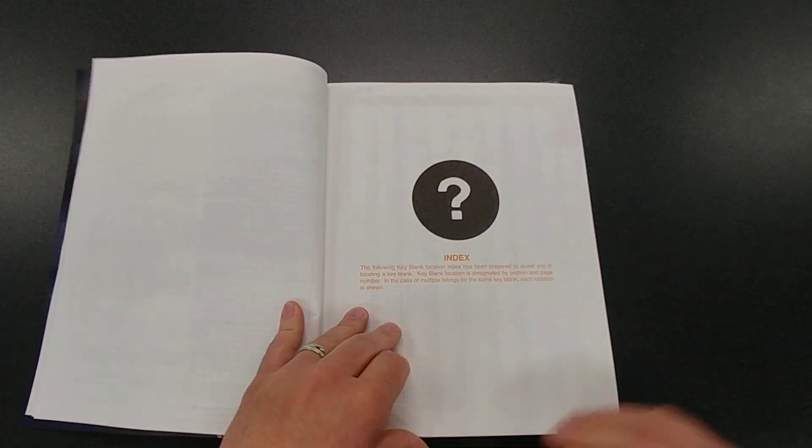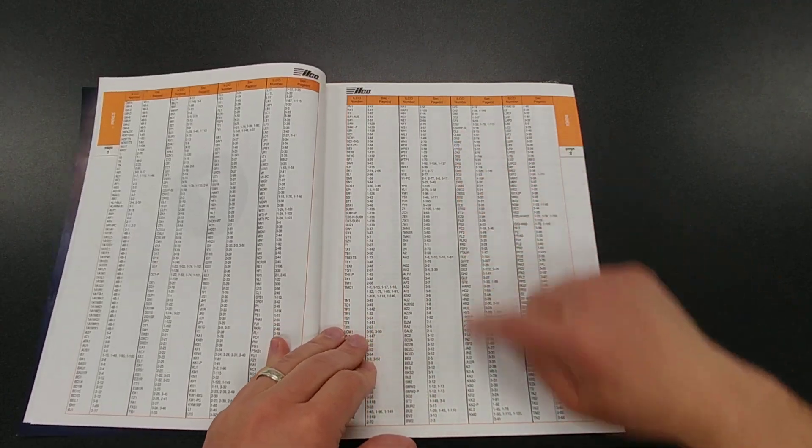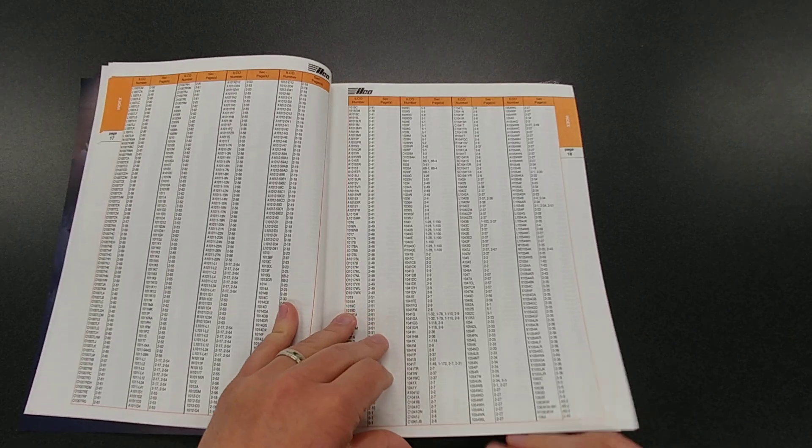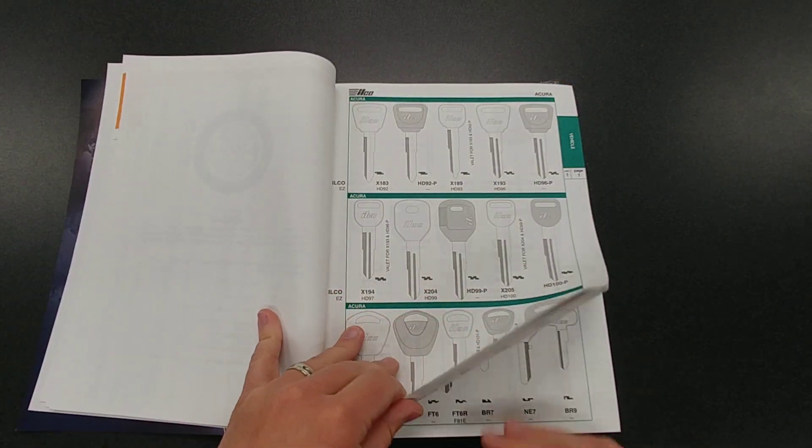Before I do that, though, you can go to the index where you can look up a key, go to the page number, make it easy. They also have some competitor key blank cross-reference guides in here for you.